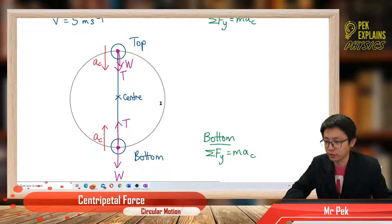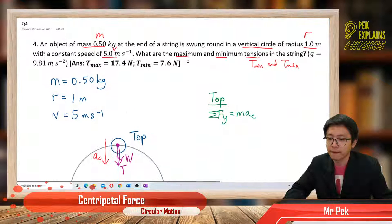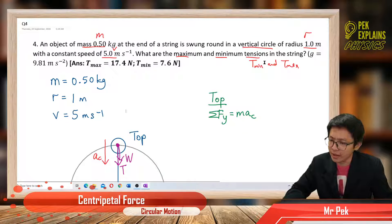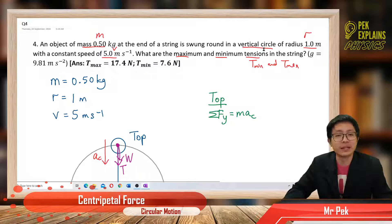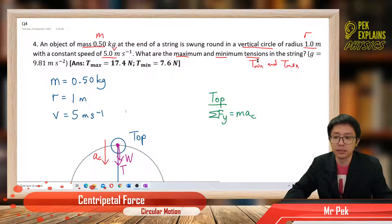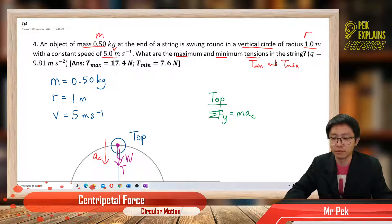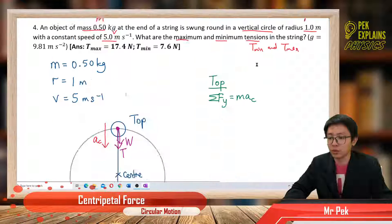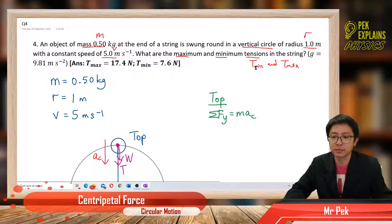Remember how you draw the free body diagram. Why do you have different tension in the string? It is because the object is traveling in a vertical circle. When the object travels in a vertical circle, there will be different tension. If it's a horizontal circle, the tension is normally the same. But if it's a vertical circle, the tension becomes different depending on the position. So which position has minimum tension and which has maximum tension?